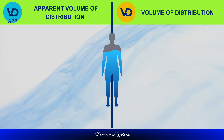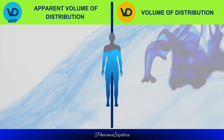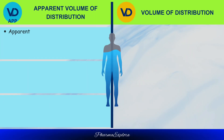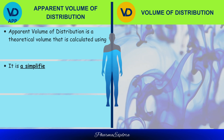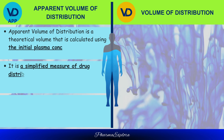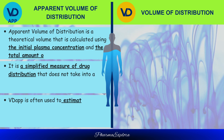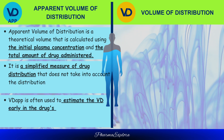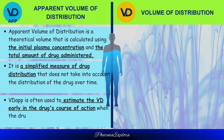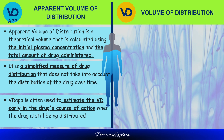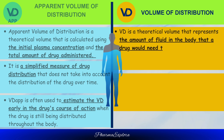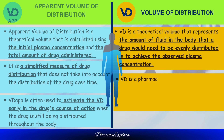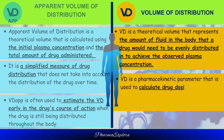Now let's look at the apparent volume of distribution versus the volume of distribution. The apparent volume of distribution is a theoretical volume calculated using the initial plasma concentration and the total amount of drug administered. It is a simplified measure of drug distribution that does not take into account the distribution of the drug over time, and is often used to estimate distribution early in the drug's course of action, when the drug is still being distributed throughout the body.